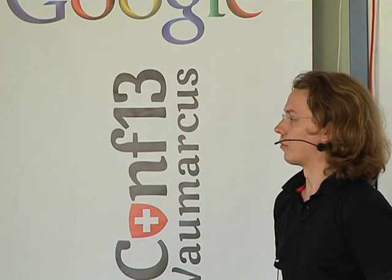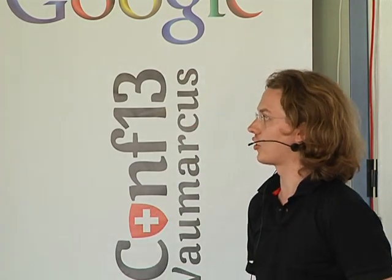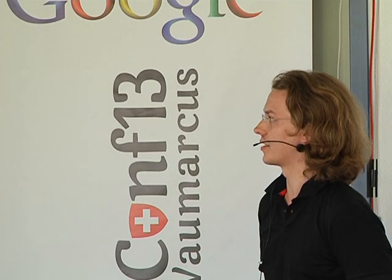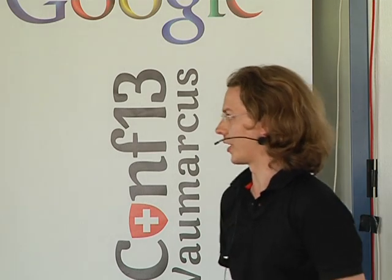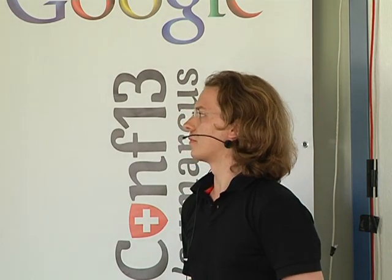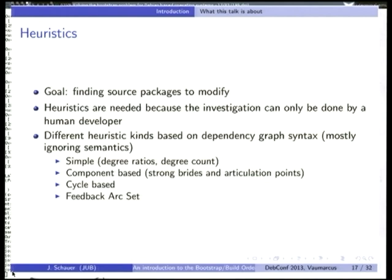I developed several heuristics to find those source packages to modify. Heuristics are needed and can't be replaced by an automatism because all this work can only be done by a human — only humans are able to code and analyze software. It mostly uses the dependency graph syntax, largely ignoring the semantics of dependencies. But it turns out that doing that already works surprisingly well — just taking the syntax of the graph, not the meaning of the packages. I developed simple heuristics, component-based ones, cycle-based ones, and in the end the feedback arc set algorithm.